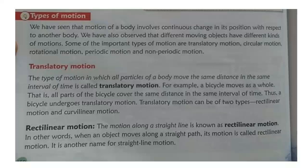Good afternoon all. Today we are going to discuss the topic: types of motion. Motion of a body involves continuous change in its position with respect to another body — that is the meaning of motion. We have also observed that different moving objects have different kinds of motion. Some important types of motion we will study are: translatory motion, circular motion, rotational motion, periodic motion, and non-periodic motion — five types in total.